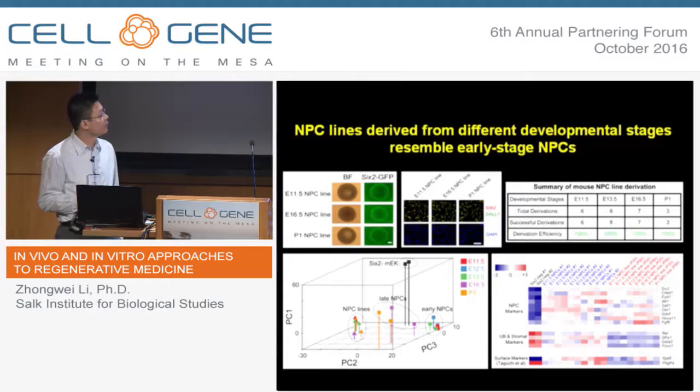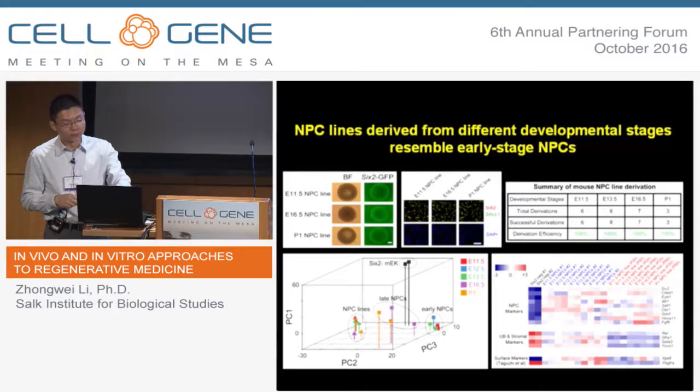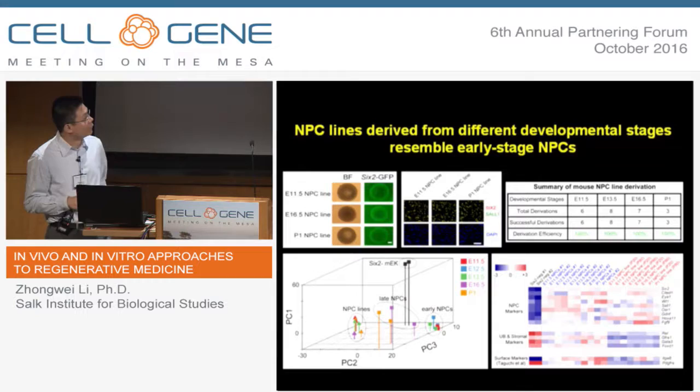They can also grow very quickly. Starting from 3,000 cells per aggregate, they can grow to 100,000 cells per aggregate within 4 to 5 days. If we look at the gene expression of these cells, we can see that they express very homogeneously the MPC marker genes including Six2, Sall1, and Cited1. Using this MPSR 3D culture condition, we can also derive MPC lines from other developmental stages with 100% successful rates.